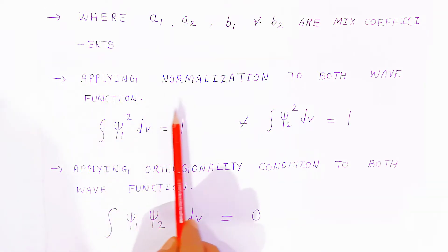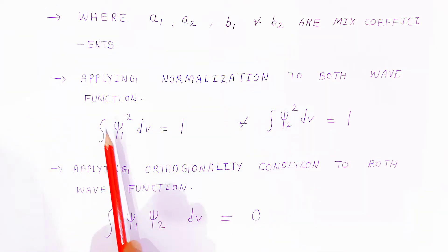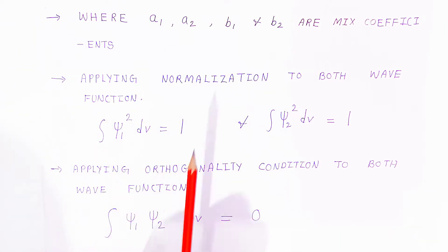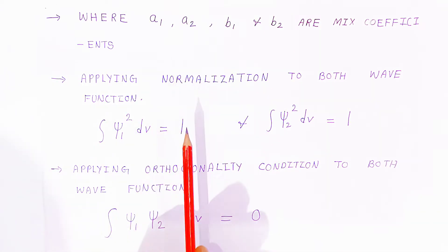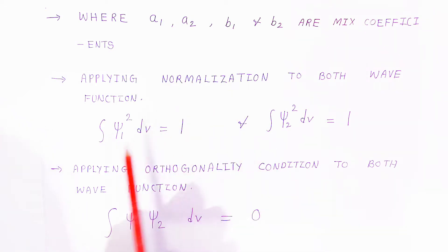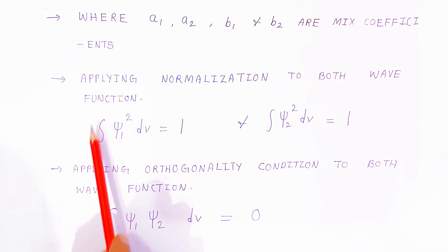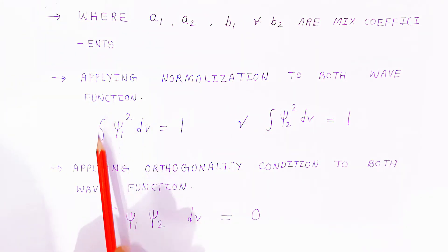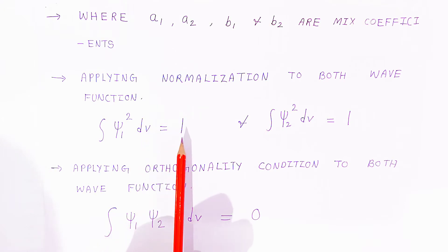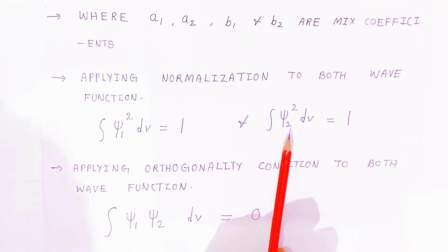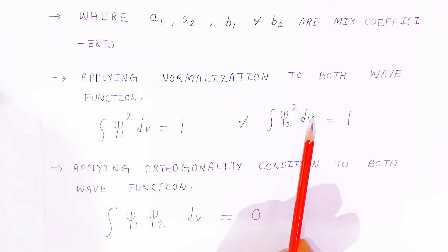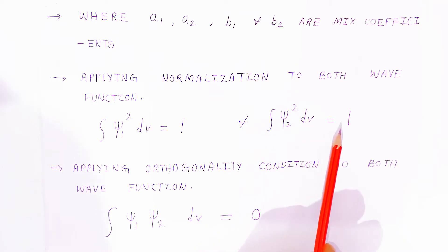To find the values of A₁, A₂, B₁, and B₂, we are going to apply normalization to both wave functions. We have already seen what normalization is in the last video. When you integrate Ψ₁² with respect to volume dV, it always equals 1. Same for the second wave function: integrating Ψ₂² dV also gives 1.